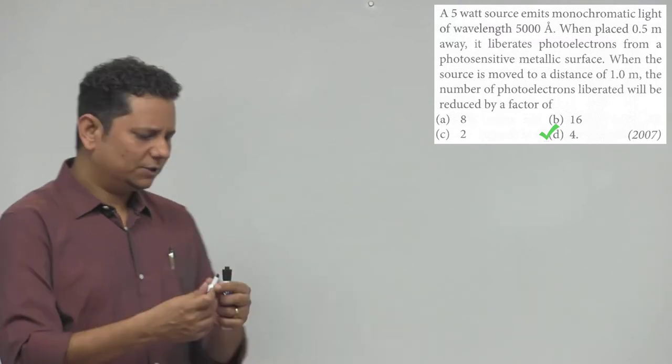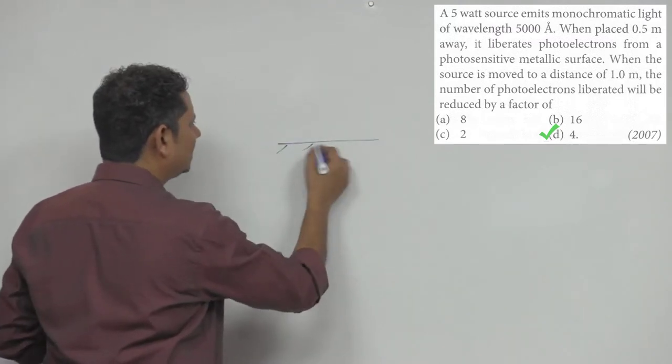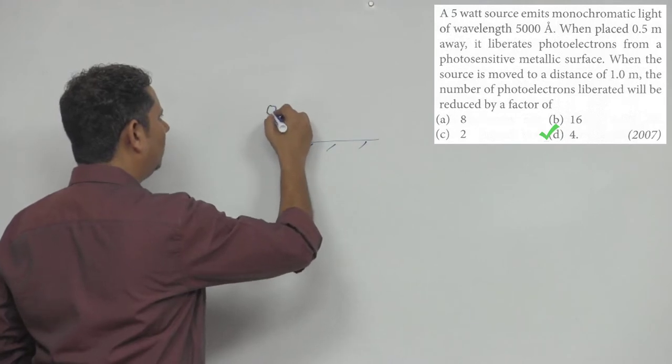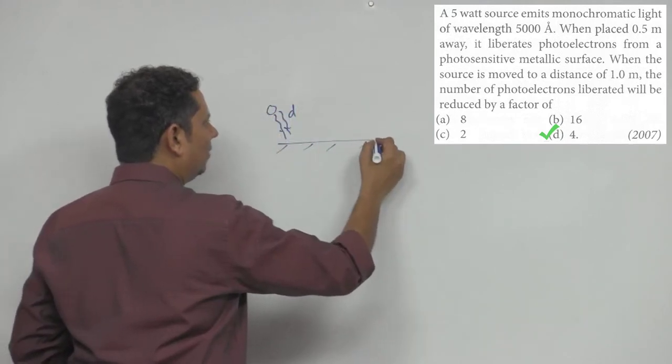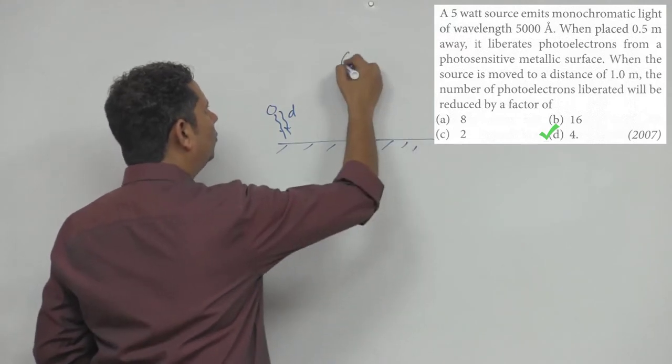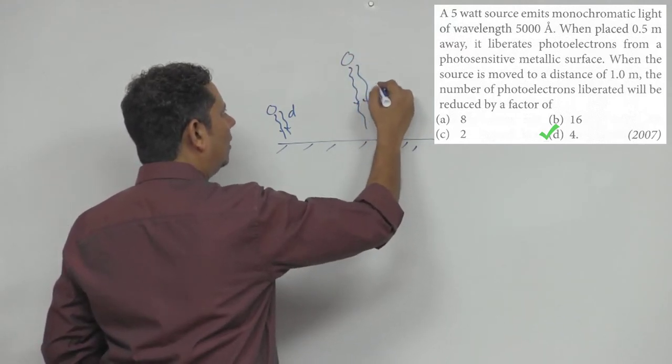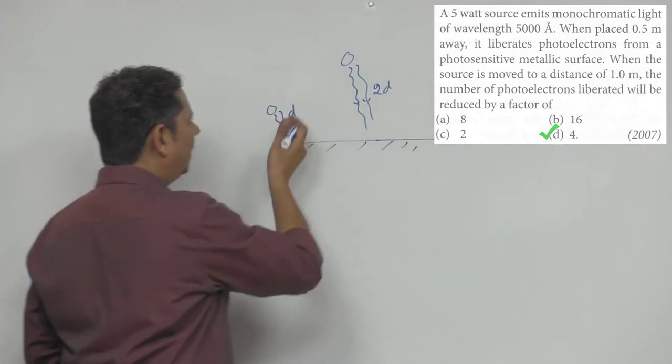Let me explain the theory. The scenario is: this is your surface, here your bulb is placed, photons are coming from it. This bulb is placed at distance d. When you move this bulb to 2d distance, the first distance becomes 2d distance.